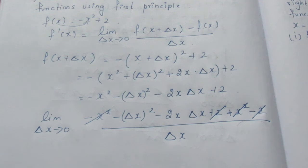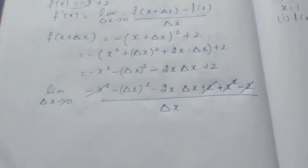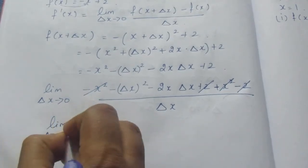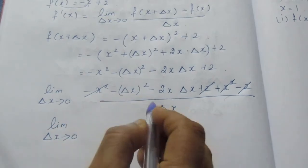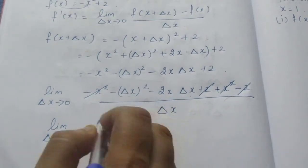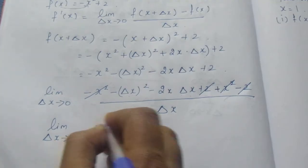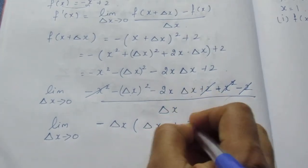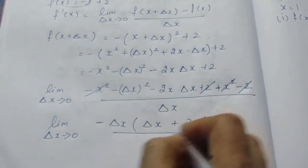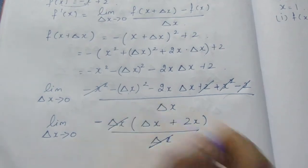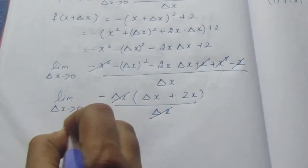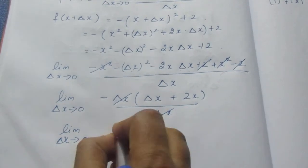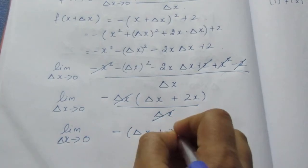Minus delta x, minus delta x we will cancel. Now, limit delta x tends to 0. Now, what is it? Minus of delta x plus 2x.